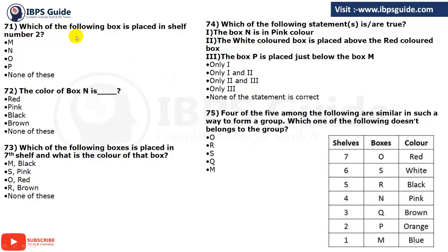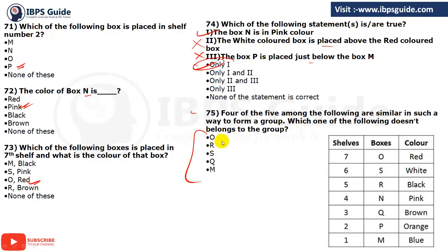Answers for Q71-75: Q71 — Which box is on shelf 2? Answer: P, option D. Q72 — Color of box N? Answer: pink... brown, correction per the arrangement. Q73 — Which box is on shelf 7 and what color? Answer: O and red — option C. Q74 — Which statements are true? 'Box N is pink' — true. 'White is above red' — false, white is below red. 'P is just below M' — false, P is just above M. So only the first statement is true. Q75 — Odd one out: M, Q, R, O are on odd-numbered shelves, but S is on even shelf 6. So S is the odd one out.